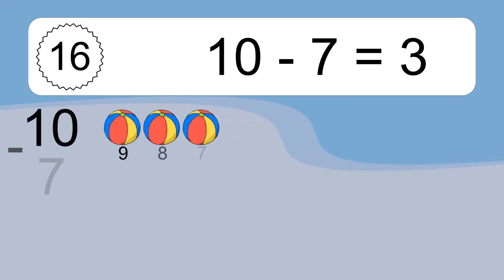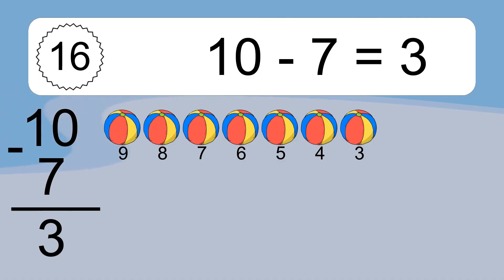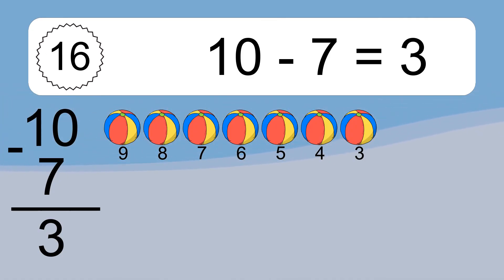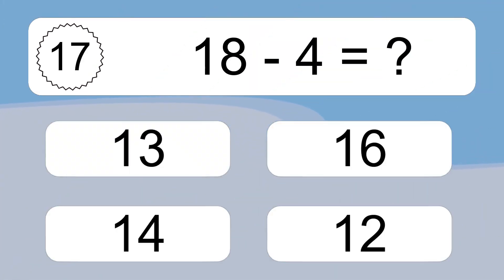10 minus 3 equals 3. Let's count it: 9, 8, 7, 6, 5, 4, 3.